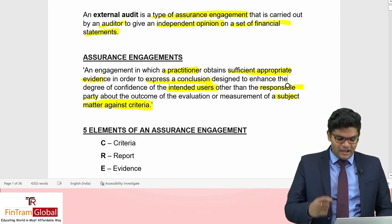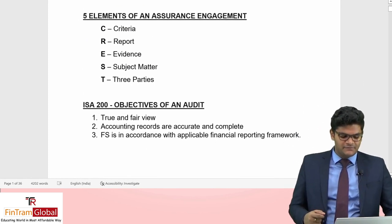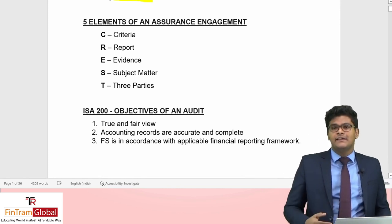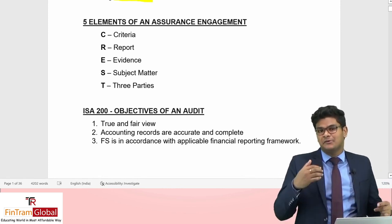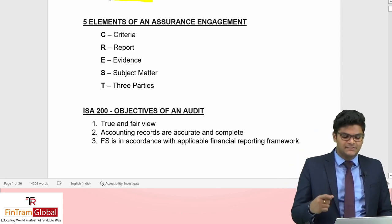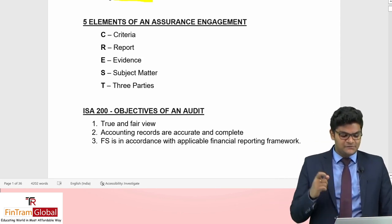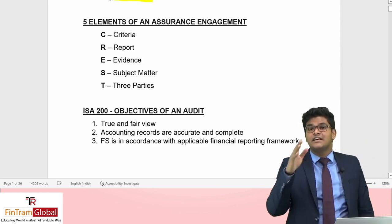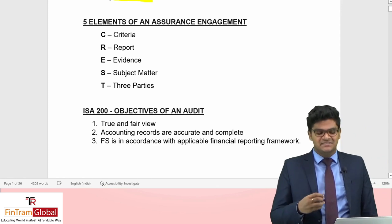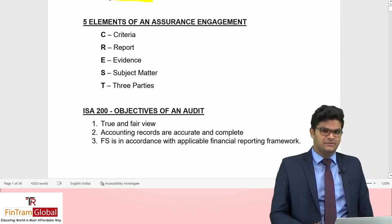Moving on to the five elements of an assurance engagement. You can memorize these using the mnemonic CREST. C stands for Criteria, R for Report, E for Evidence — and not just any evidence, but sufficient and appropriate evidence — S for Subject Matter, and T for the Three parties involved in the assurance engagement.